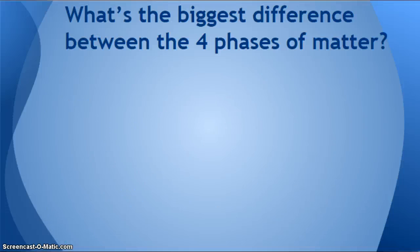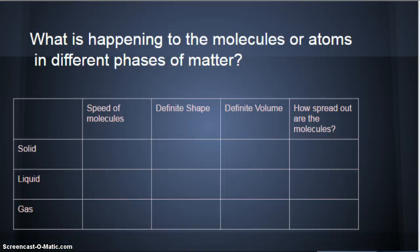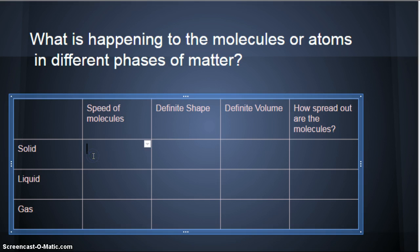So what's the biggest difference between the four phases of matter? The speed of the molecules. Now, this chart you've seen before, first semester. So what's happening to the molecules or atoms in different phases of matter? So which one is the slowest? Well, that's going to be our solids, right? Solids are slow.